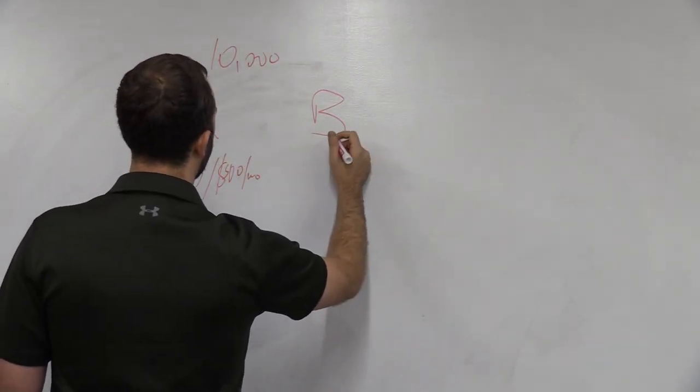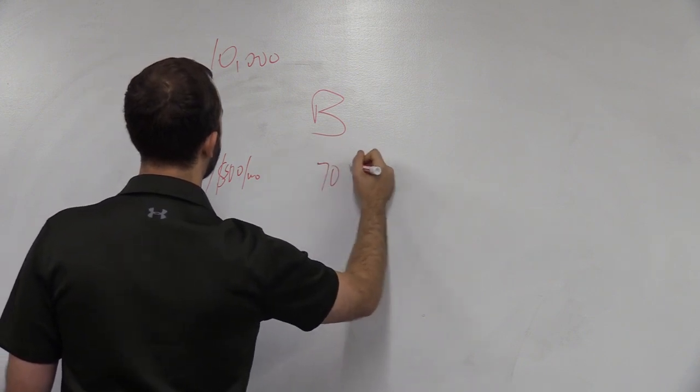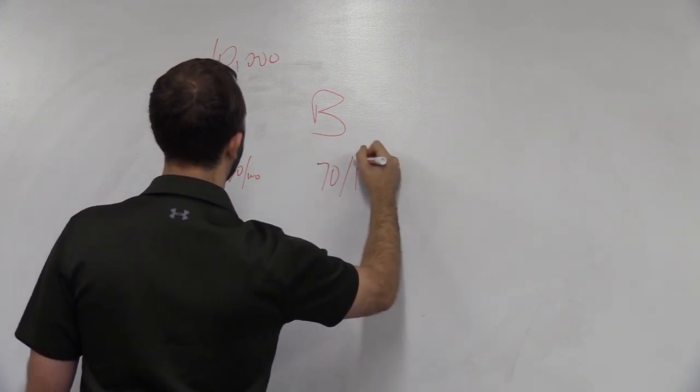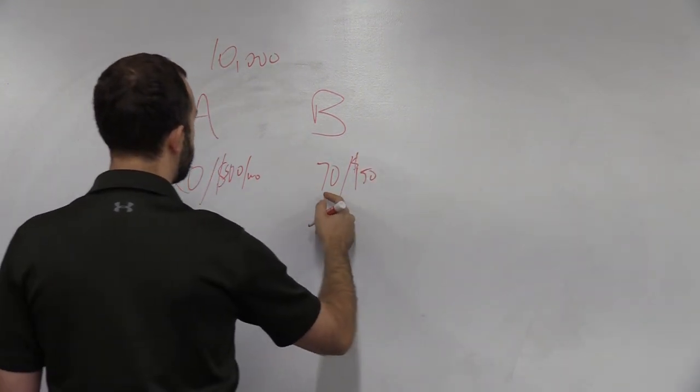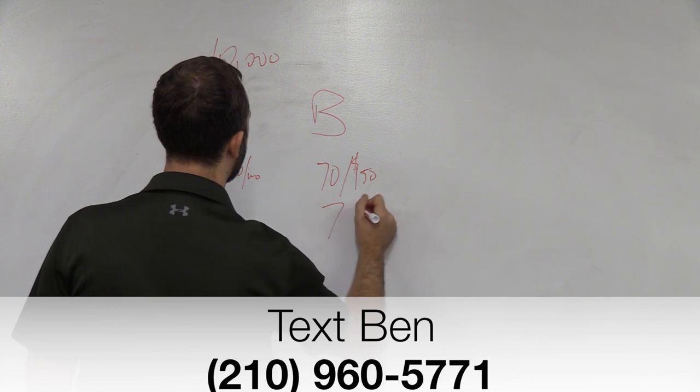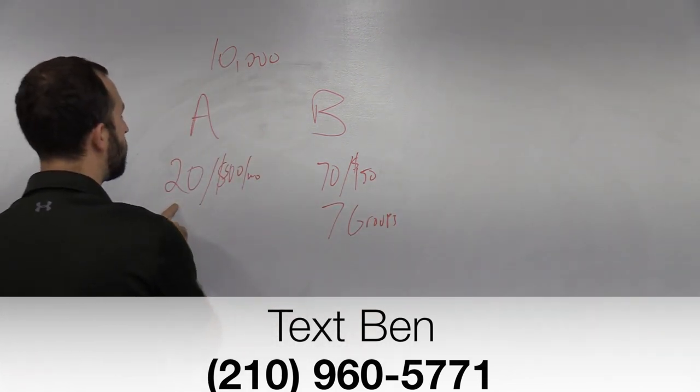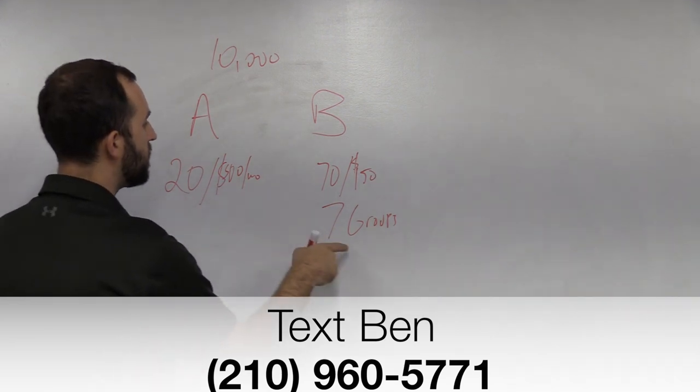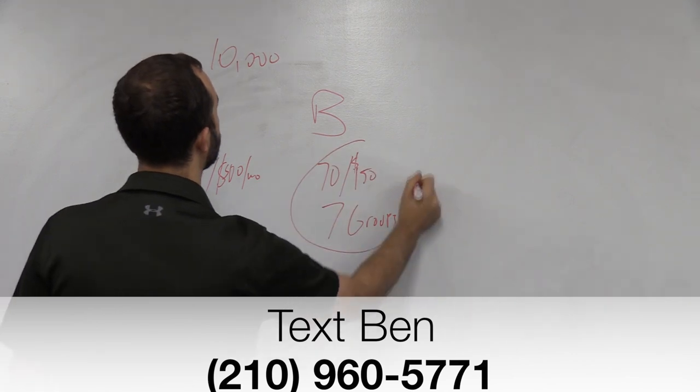We also talked about having group training set up, and it was 70 kids at $150 a month. And that'd be groups of 10, so you'd have seven groups. So this is 20 hours of work per week. This is seven hours of work per week. This is obviously the more appealing option.